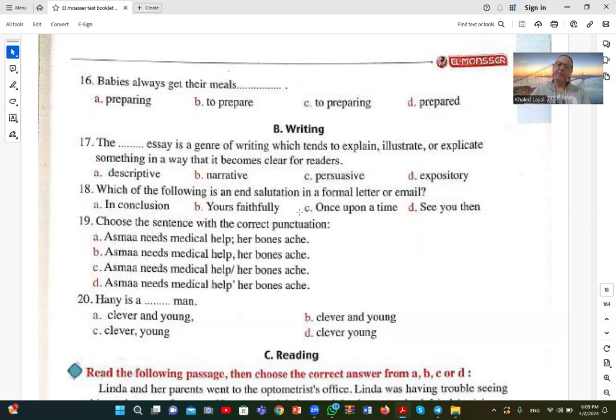Number twenty: Honey is a clever young man. When ordering adjectives, we say 'clever young man'. So that's the correct answer. We'll stop at this point. In upcoming videos, we'll explain the reading and translation sections together. Follow us, and we wish you all success. God bless you. Follow us.